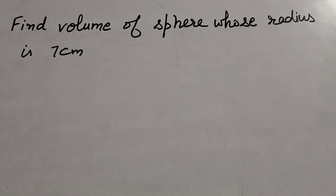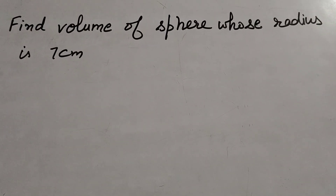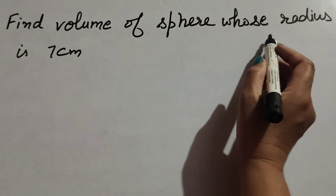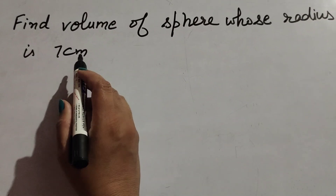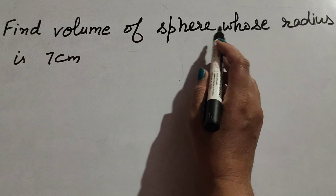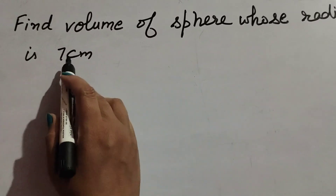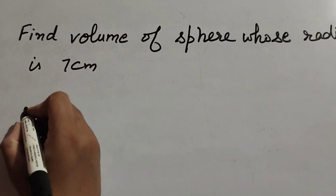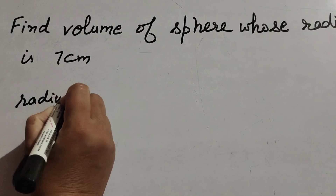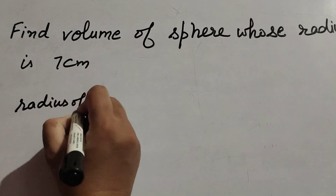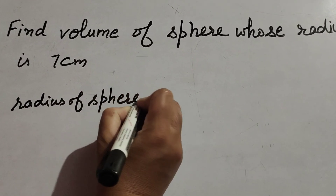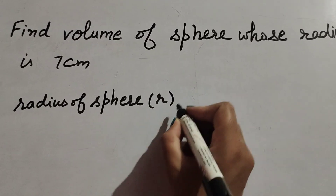Hello friends, welcome to my channel. In this video we discuss finding the volume of a sphere whose radius is 7 centimeters. The given information is the radius, and we need to find the volume of the sphere. The radius R is given.